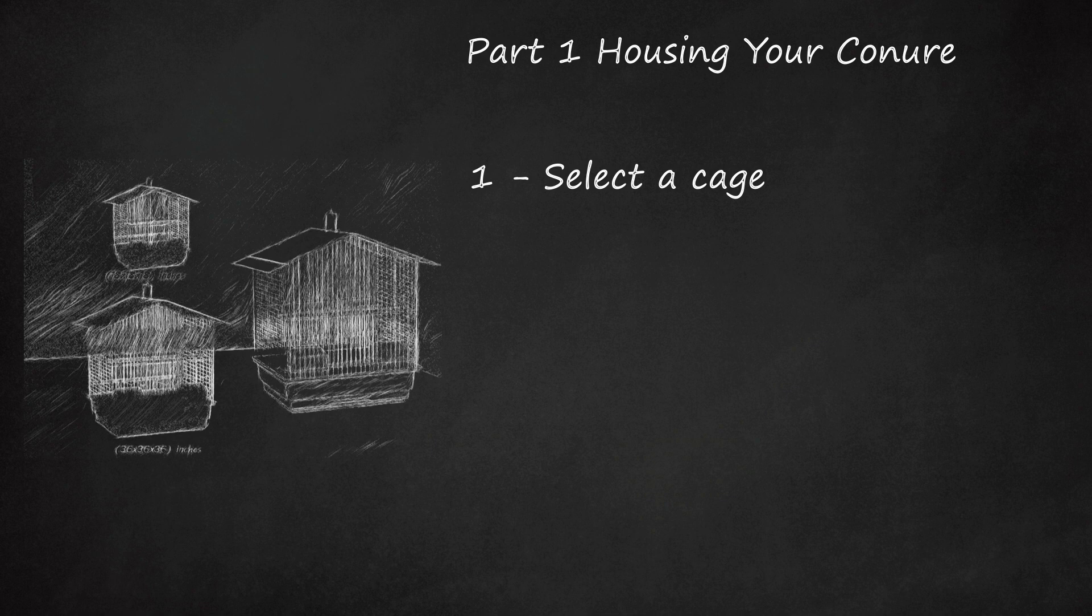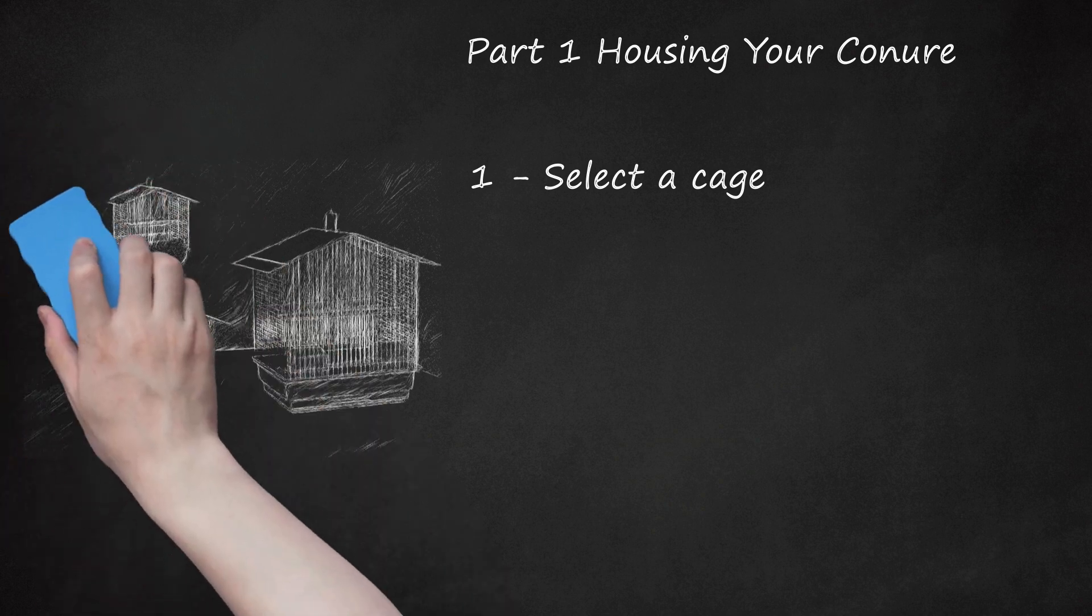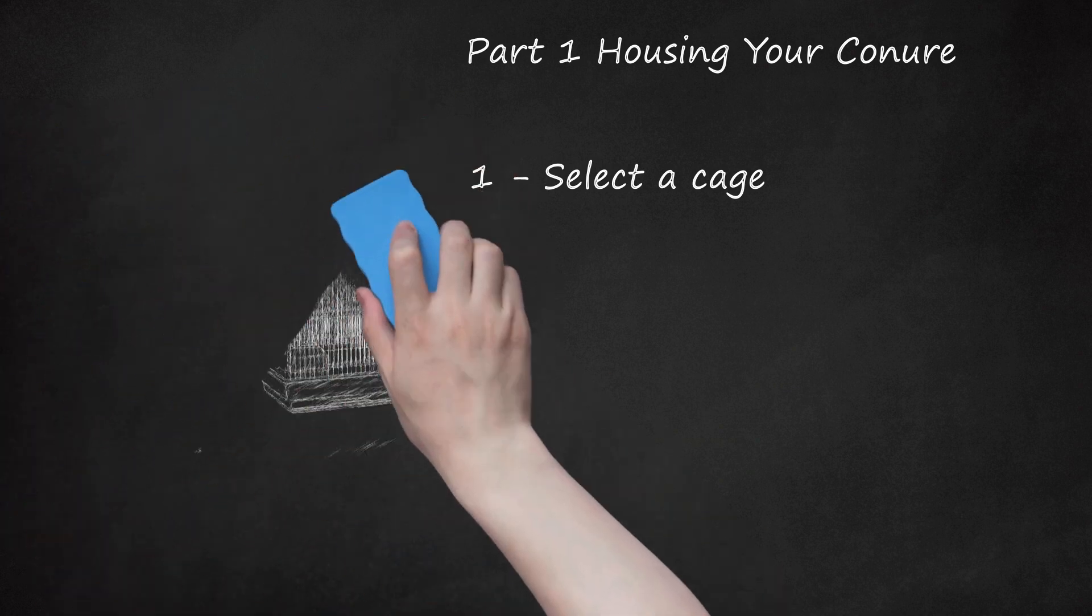The cage can be either horizontal or vertical. The cage bars should be horizontal so your conure can climb on them. The bars should be spaced no further than 3/4 inches to 1 inch (2 to 2.5 centimeters) apart. Consider purchasing a cage cover to give your conure a sense of security when he sleeps. Alternatively, you could use a blanket or large towel to cover his cage at night.